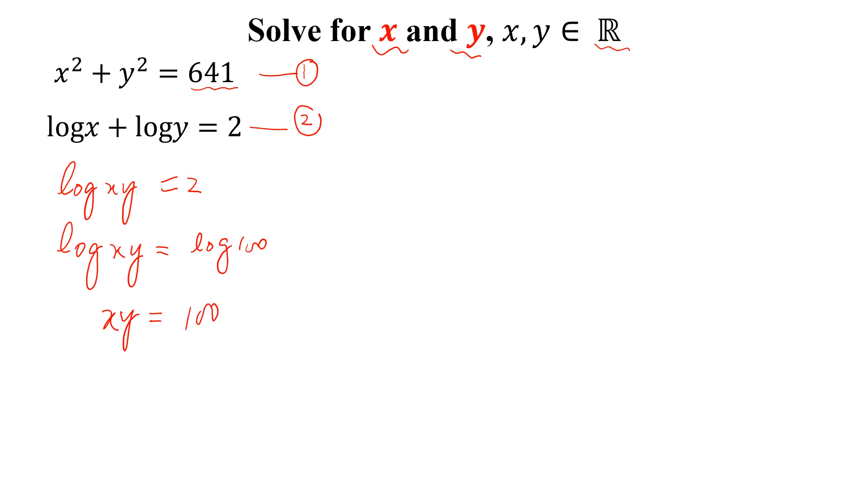Now we can write (x plus y) whole squared equal to x squared plus y squared plus 2xy, so x squared plus y squared is 641 plus 2 times 100.